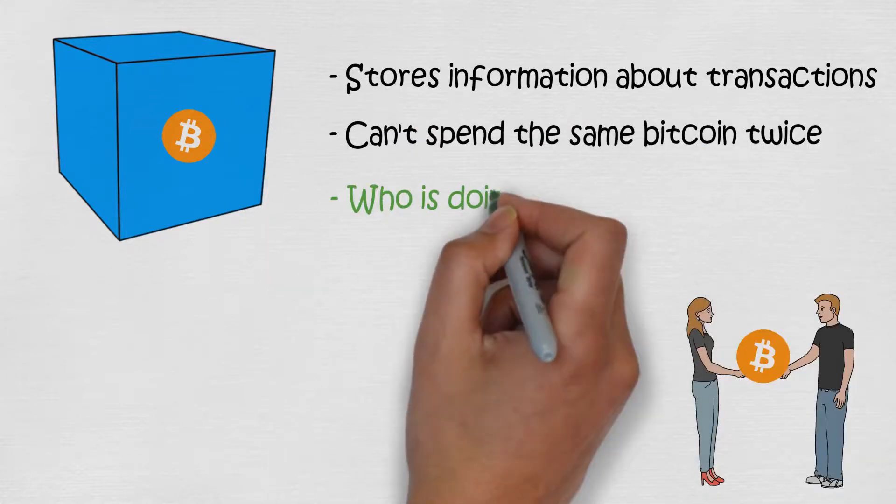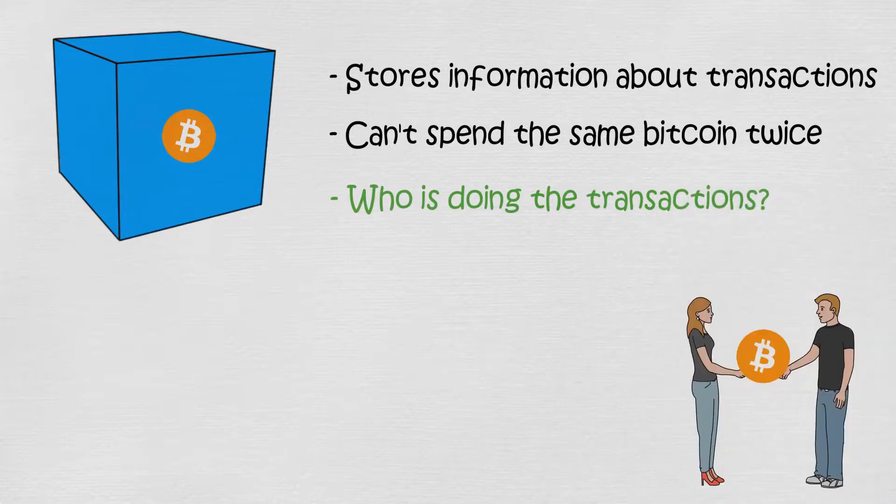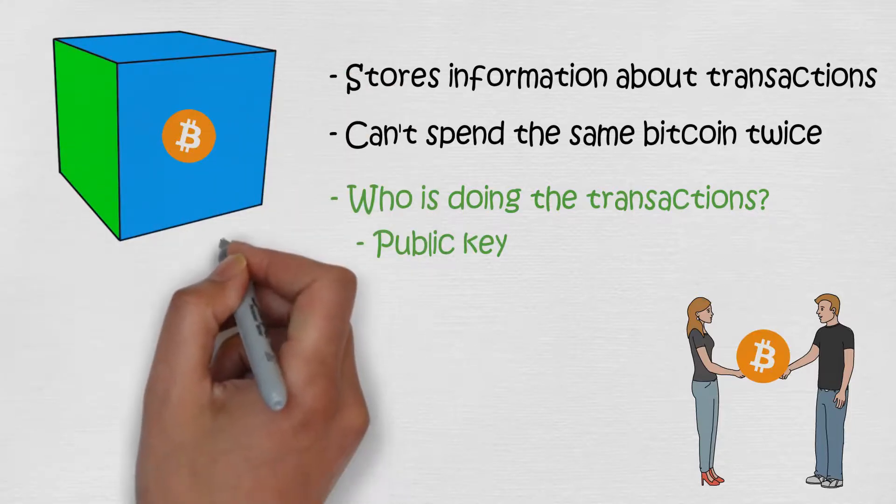Blocks also store information about who is doing the transactions. If you spend Bitcoin, a block records your public key. Public key is kind of like your name. Everybody has a public key, so your real name or any other information won't be shown to everybody.